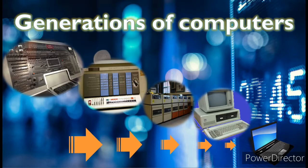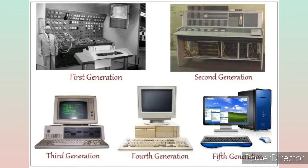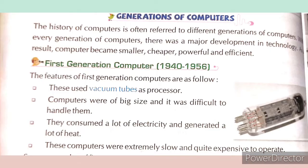Generations of computers means different time periods of development in technology. As a result, in every generation, computers become smaller — meaning small in size — cheaper, meaning less expensive than previous generations, and powerful and efficient, meaning able to do more calculations and more work systematically.